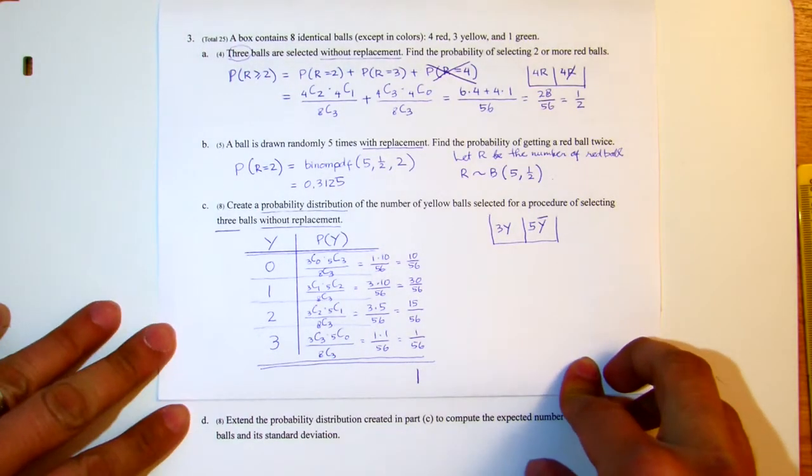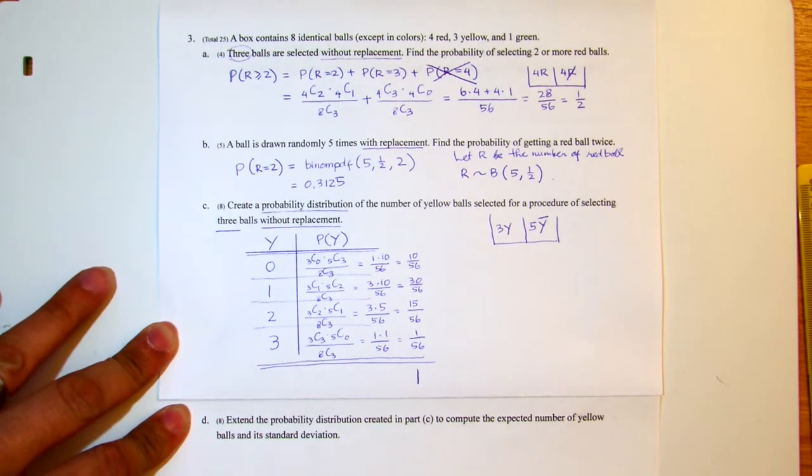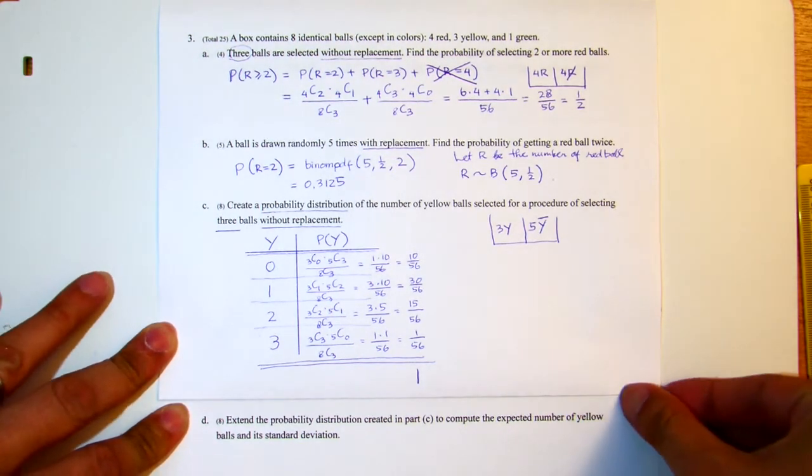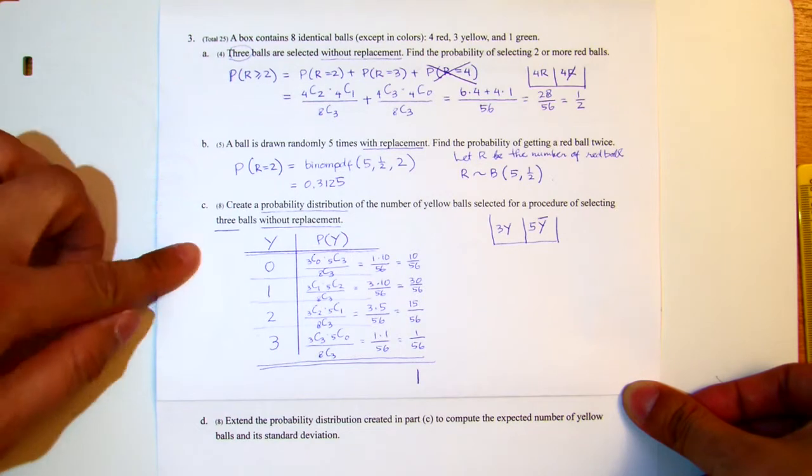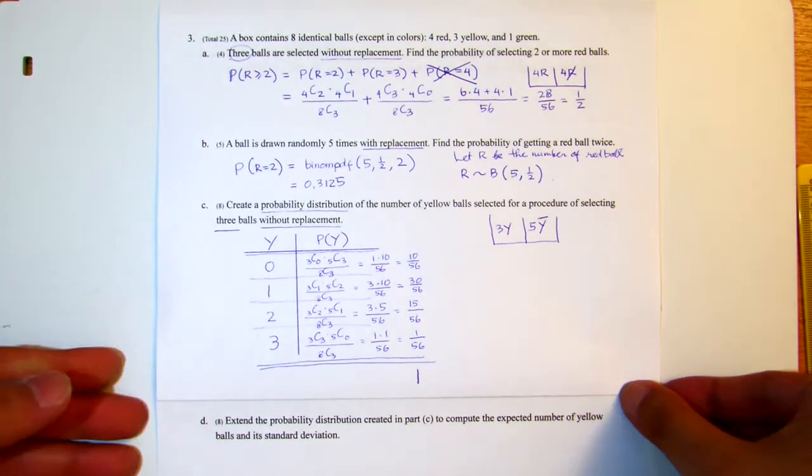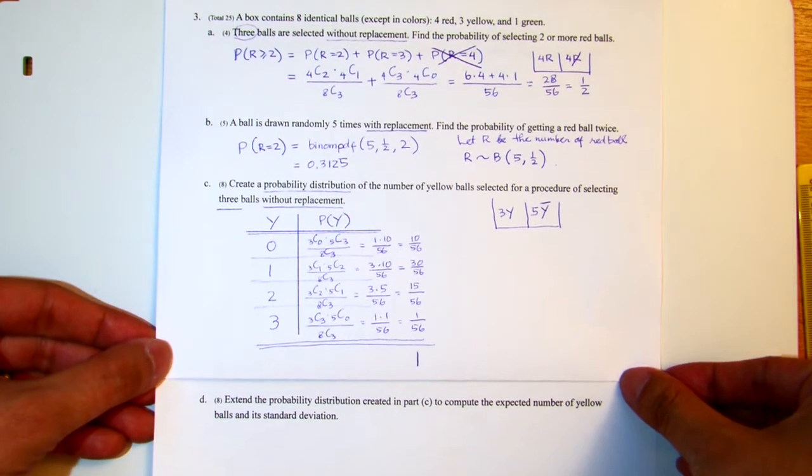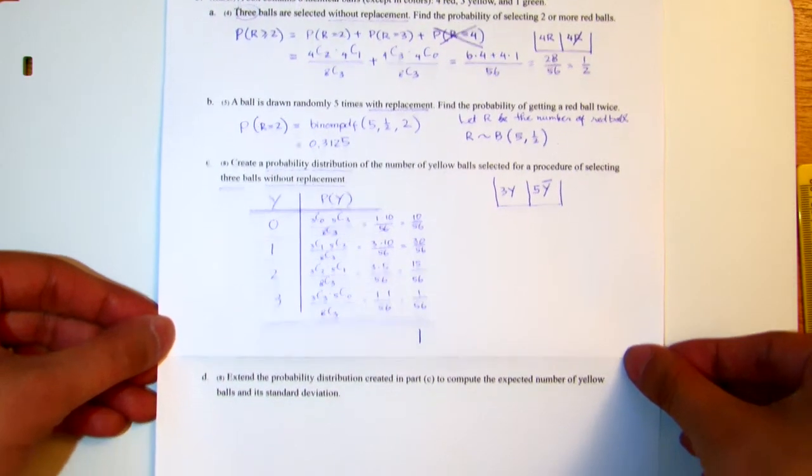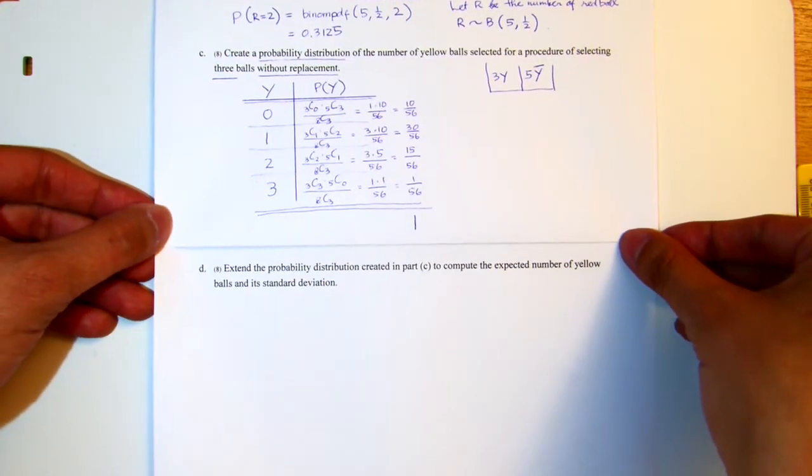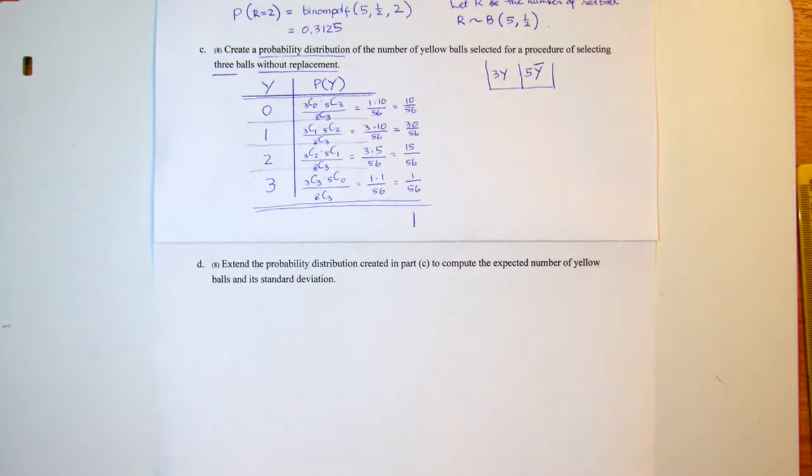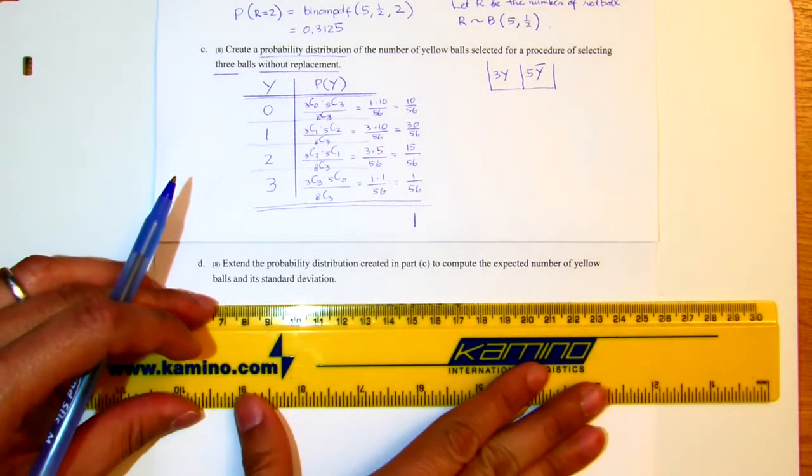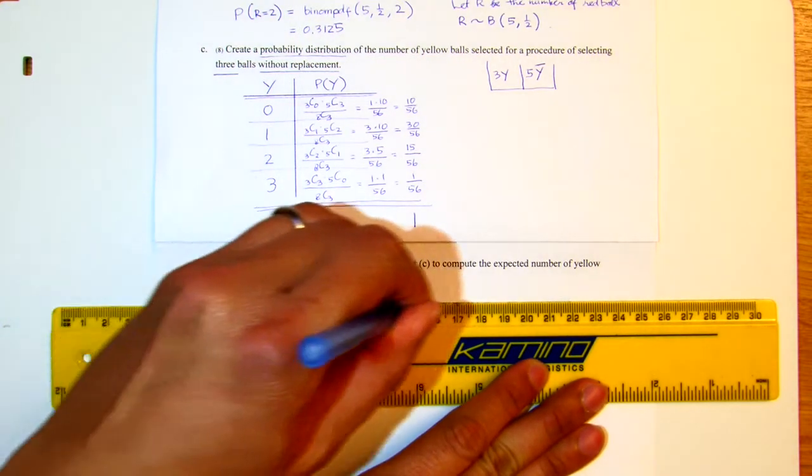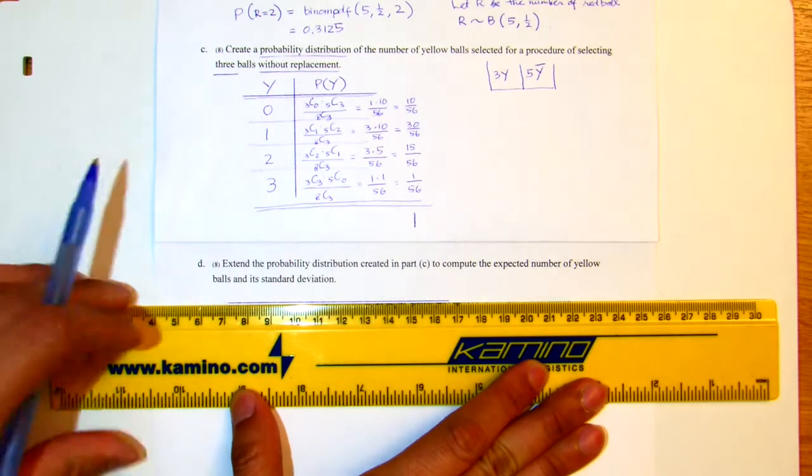Now we will work on the next question, the next part for 2010 Math 227 Test 2, Number 3, Part D. We already did A, B in another video, Part C in another one. Now we will work on Part D. We can see the question here: extend the probability distribution created in Part C to compute the expected number of yellow balls and its standard deviation. What I will do is I will extend the probability distribution we have up there. I will copy that down and I will extend it.